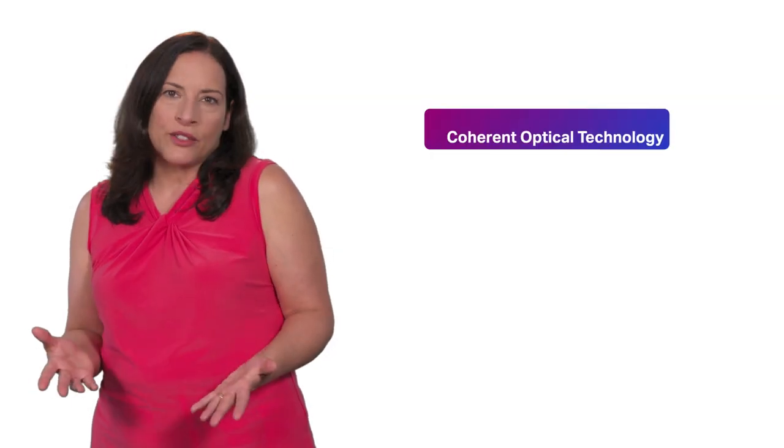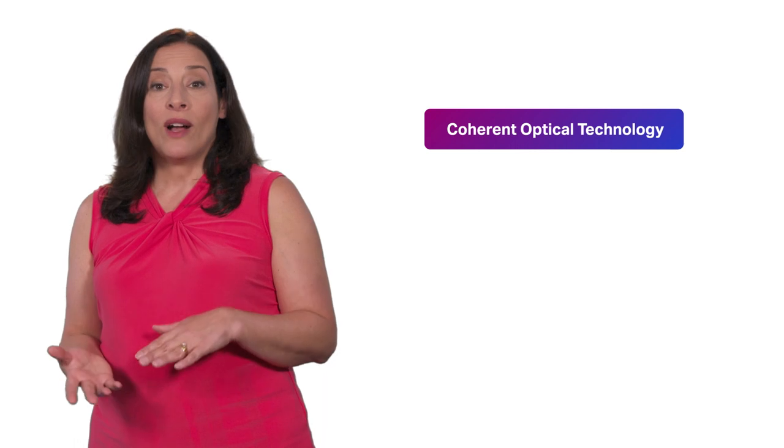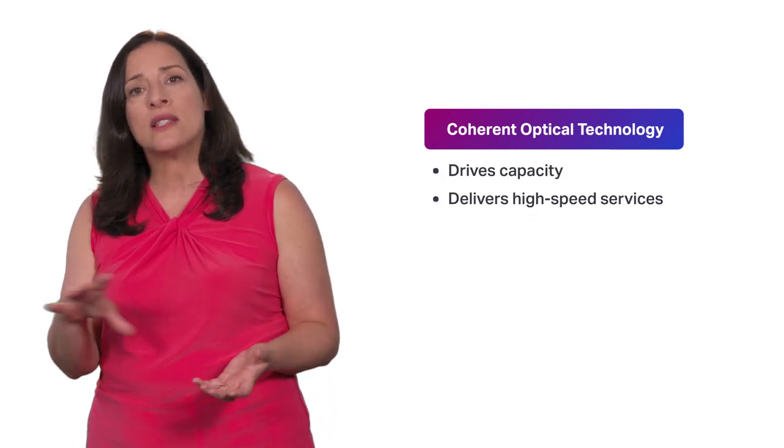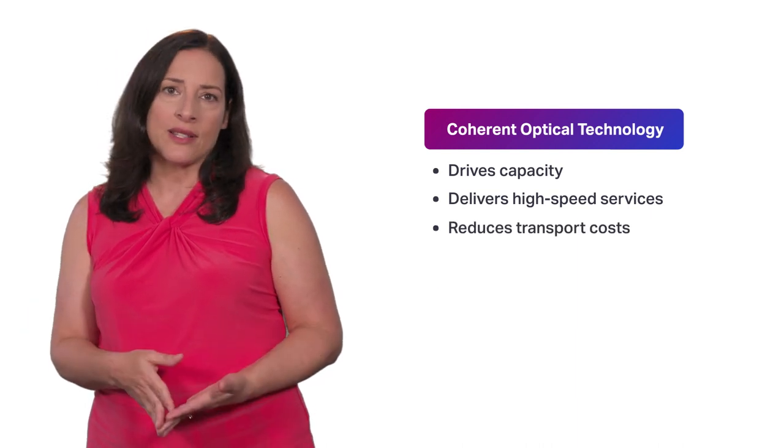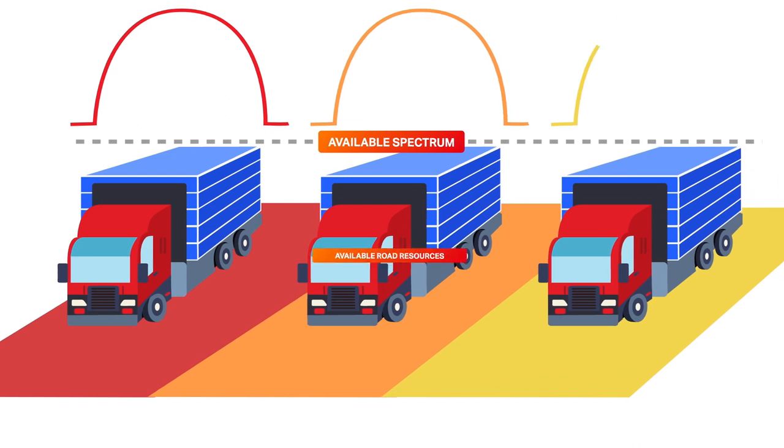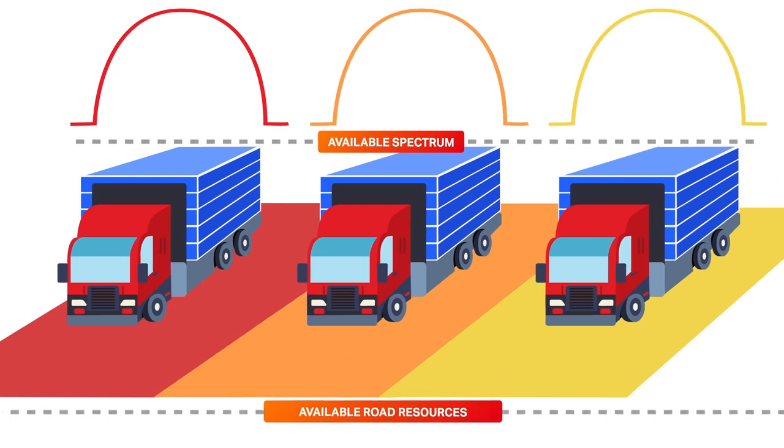First, why do we even care about Coherent Optical Technology? Well, because it's a critical element that drives the amount of capacity and high-speed services that can be carried across networks, and a critical element in controlling their costs. Consider Coherent Optical Transport as analogous to Freight Transport. The goal of network providers using Coherent is to transport as much capacity as they can or need in the most cost-efficient manner that they can, using wavelengths across their installed fiber. This is similar to wanting to be as efficient as possible in freight transport, carrying as much payload as you can, using available truck and road resources.